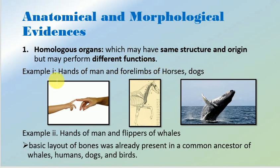The first example is the hands of men and the four limbs of horses and dogs. Horses and dogs use their four limbs for walking, while humans use their hands for different functions. The structure and origin of hands and four limbs of horses and dogs are similar, but they perform different functions.